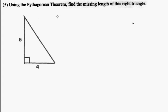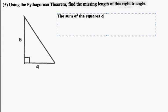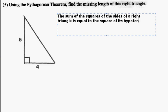So again, we're going to say this one more time. The sum of the squares of the sides of a right triangle is equal to the square of its hypotenuse. That describes, in words, the Pythagorean Theorem.